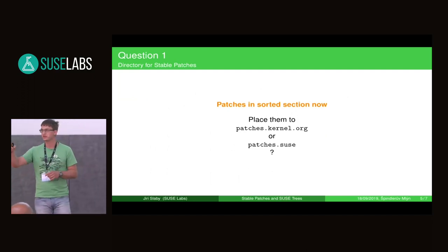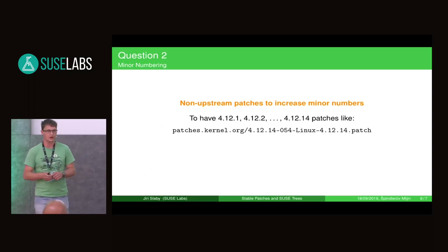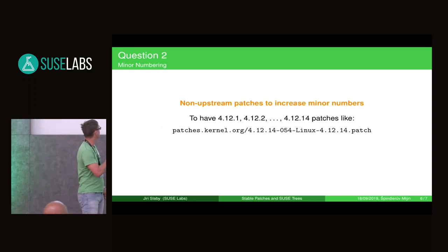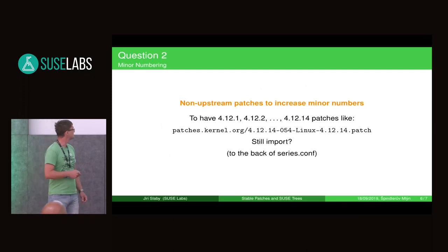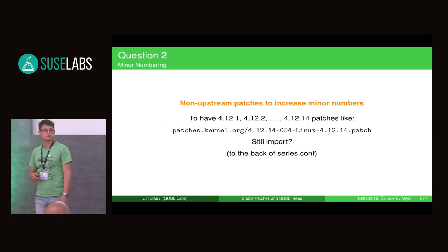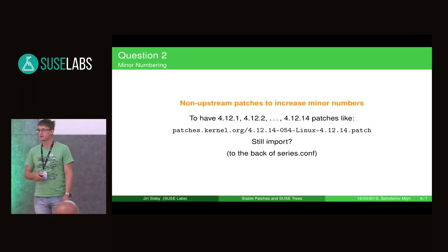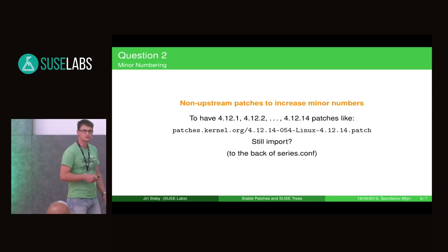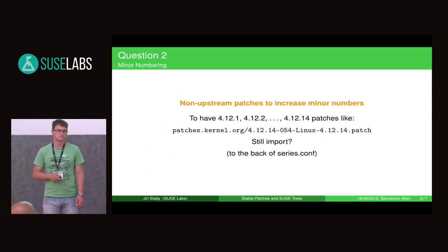So what about minor numbering? Because stable trees when released increase minor numbers. So when we had 4.12, we then had 4.12.1, 4.12.2, and so on. This was done by separate patches. They are not upstream patches in fact. So should we still import such patches and increase the minor numbers or not? I wouldn't say so, but there was an argument that customers want to see increases in minor numbers. If we're bringing all the patches that should make it the stable kernel, then we should use the stable kernel numbers. Otherwise customers are just going to be confused about what's in it.